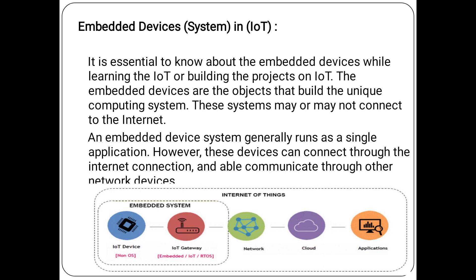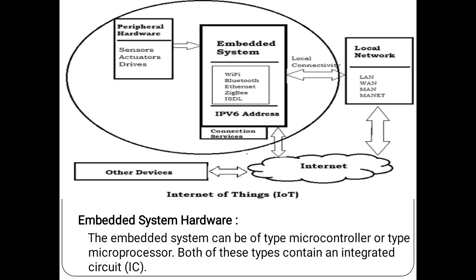Here are the embedded system and Internet of Things. As we know, we will have an IoT device, IoT gateway, network, cloud, and application. In this architecture, we can communicate through the cloud and the devices which we can embed directly.